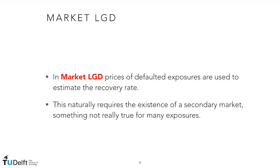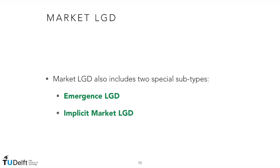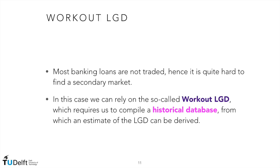Market LGD also includes two special subtypes: Emergence LGD and Implicit Market LGD. Emergence LGD relies on the market value of new financial instruments a company may offer to lenders for its defaulted bonds, such as shares or very long-term bonds. The Implicit Market LGD approach makes use of spreads on performing bonds, often under the strong assumption that LGD and PD are independent. Using Merton's model, spreads on corporate bonds necessarily depend on the expected recovery rate, and this allows us to make the necessary computations.